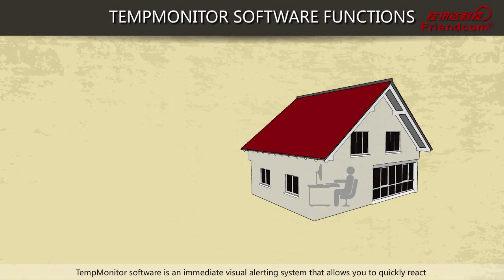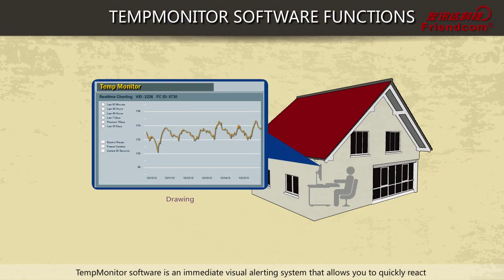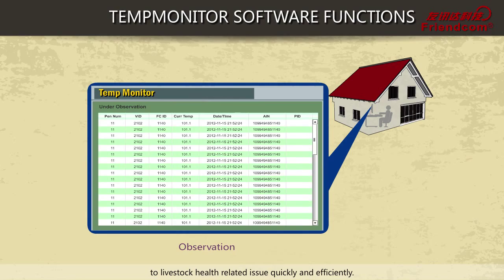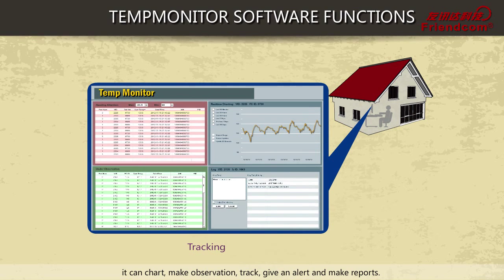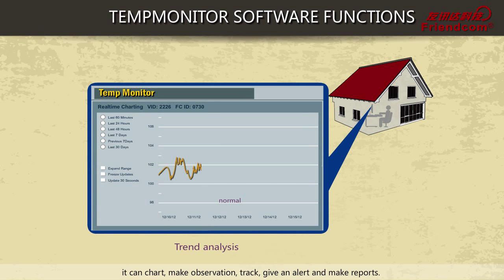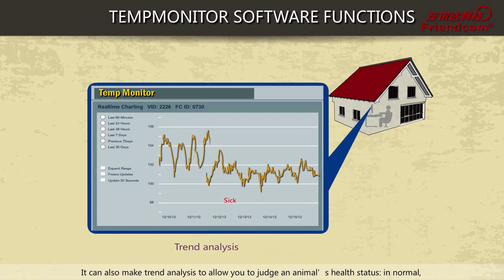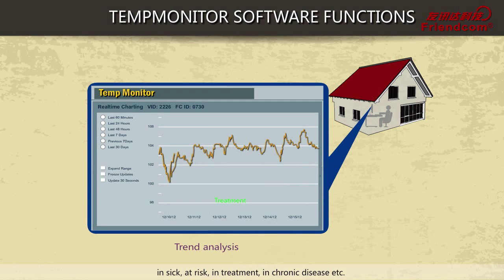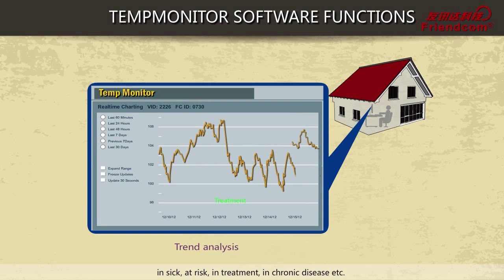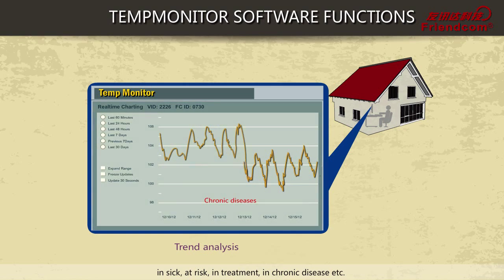Temp Monitor software is an immediate visual alerting system that allows you to quickly and efficiently react to livestock health-related issues. It can chart, make observations, track, give alerts, and generate reports. It can also perform trend analysis to allow you to judge an animal's health status — including normal, sick, at risk, in treatment, and chronically sick.